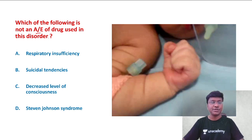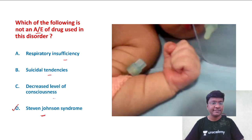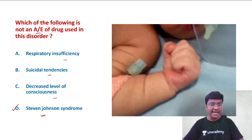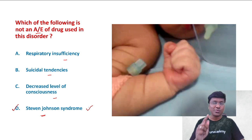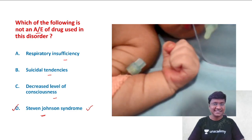Coming back to the question — which is NOT an adverse effect of phenobarbitone? The answer is Stevens-Johnson syndrome. Respiratory insufficiency, suicidal tendencies, and decreased level of consciousness are all adverse effects of phenobarbitone. The homework for today: which anti-epileptic drugs cause Stevens-Johnson syndrome?